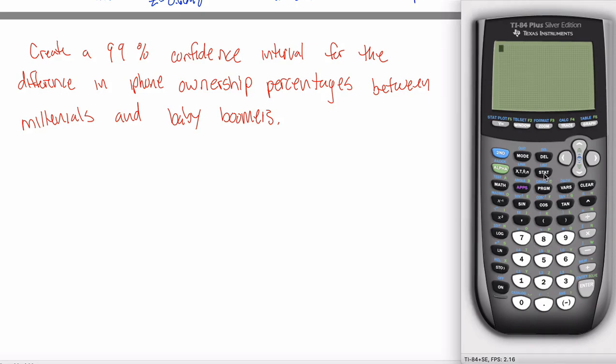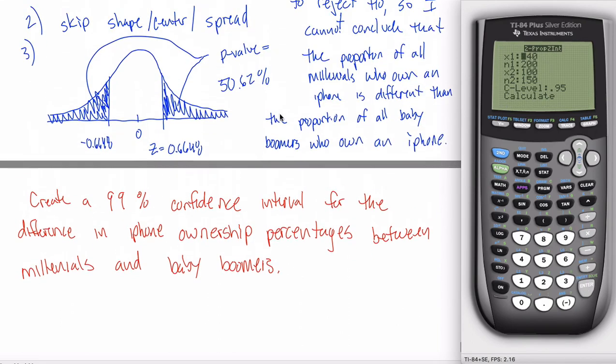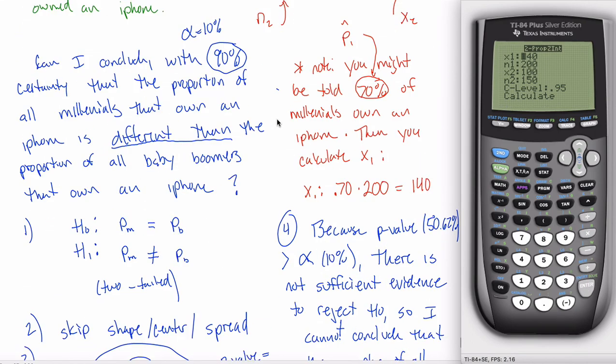So what you do to get the picture is you hit the stat key and then go to tests. And instead of selecting 2PropZTest, which is this guy that we selected last time, you're going to look for the interval version of this thing, 2PropZInterval. And you'll find it right here, 2PropZInterval.